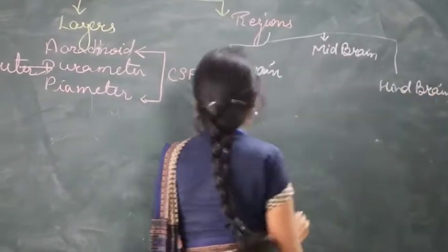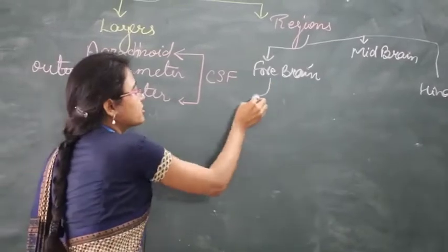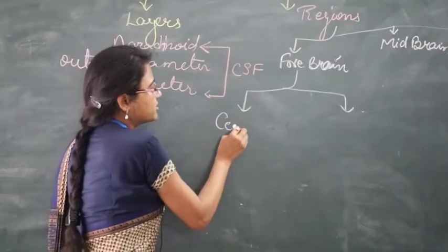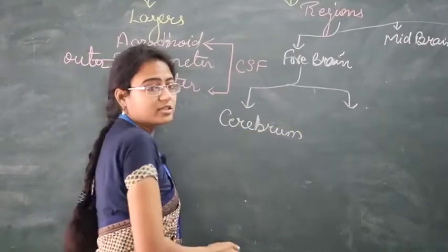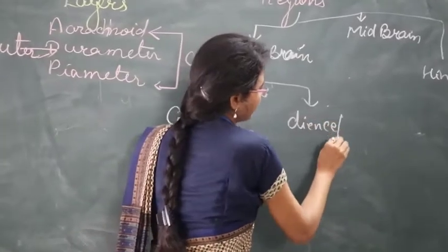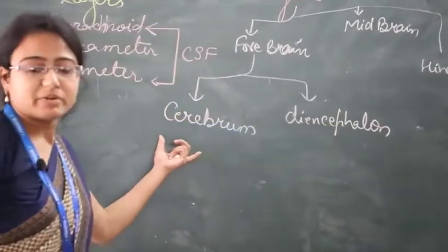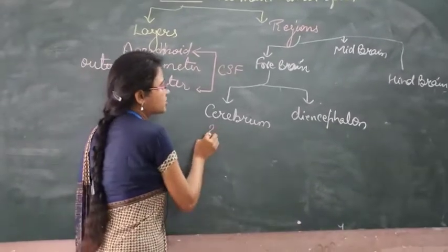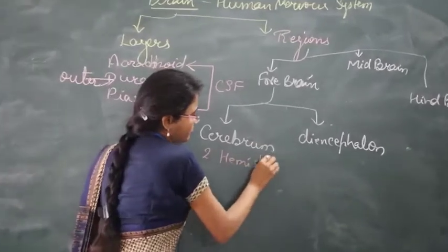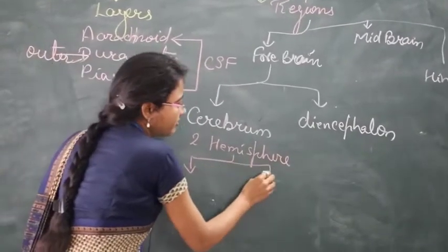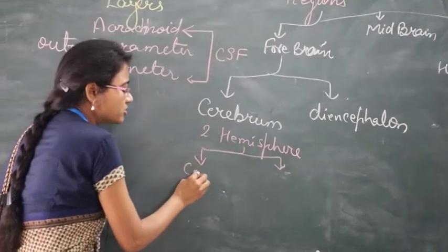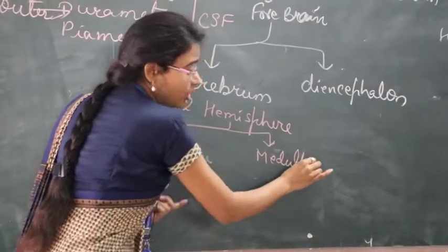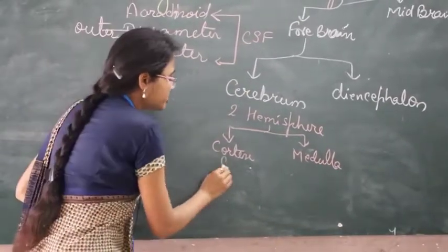The first part, the forebrain, is located at the topmost of the body and is divided into two parts: cerebrum and diencephalon. Cerebrum is the most prominent part of the brain and comprises two hemispheres. Each hemisphere is further divided into two parts — the outer part is known as the cortex and the inner part is known as the medulla. The outer cortex is filled with grey matter.